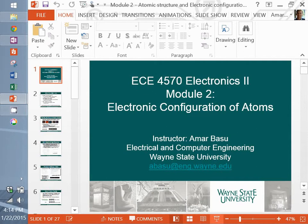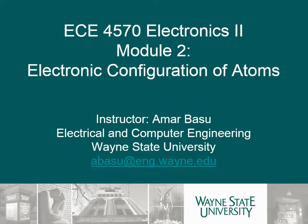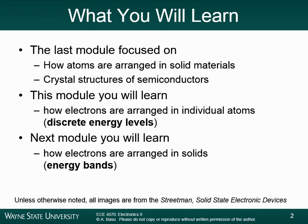This next module is module two: the electronic configuration of atoms. The last module we were talking about how atoms are arranged in solid materials — we talked about a few of the crystal structures of semiconductors. What we're going to be doing in this module is talking about how electrons are arranged in individual atoms, and you end up getting these things called discrete energy levels.